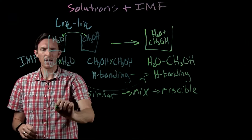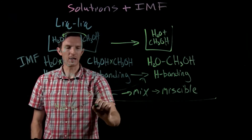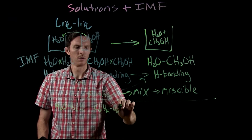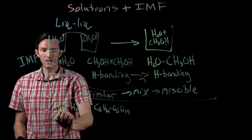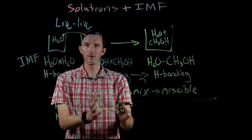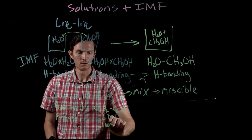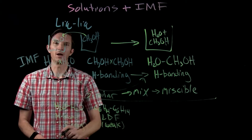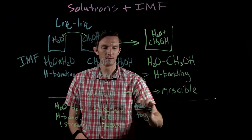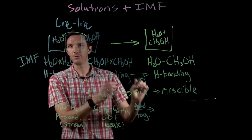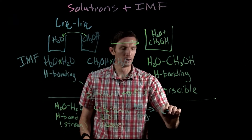Now instead of water and methanol, let's consider water and hexane. In one beaker we have water, and in another beaker we have hexane. Hexane is a nonpolar molecule. Water has hydrogen bonding — very strong attractions — while hexane-hexane interactions rely on London dispersion forces, which are weak attractions. When we add these together, the new type of attraction that can form would be between a water molecule and a hexane molecule.